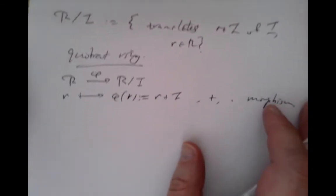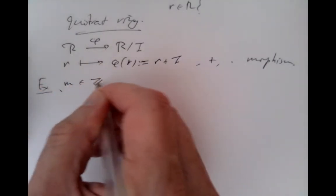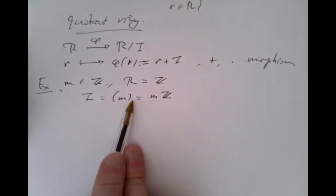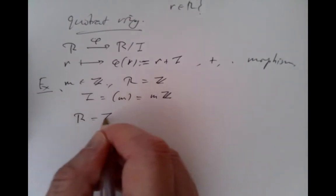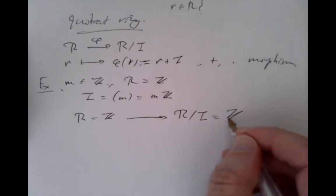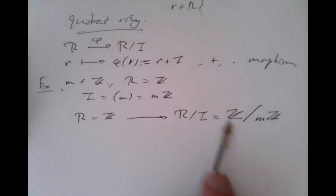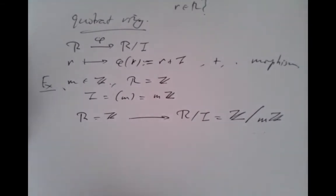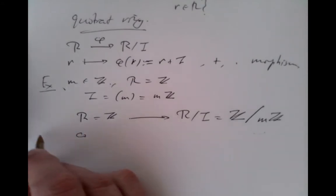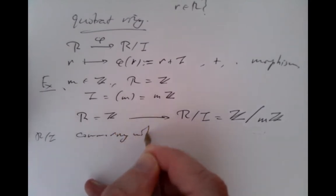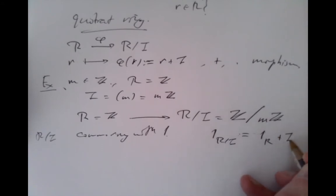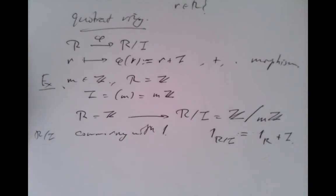We've already more or less seen all this applied in the simple case where we pick m an integer, let I be the ideal generated by m — the multiples of m — and let R be the integers. Then R mod I is the integers modulo m, which was already our notation for integers modding out multiples of m. The ring R mod I is a commutative ring with 1, and the identity element is just 1 in R translated by I.